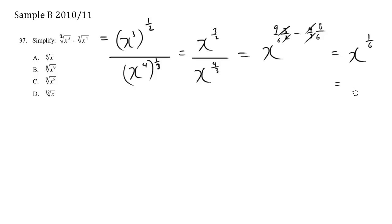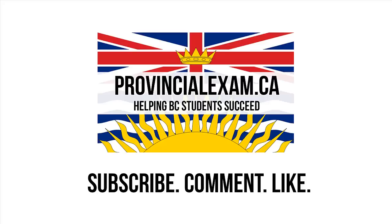which means the sixth root of x. So we have a radical symbol with index 6, which is choice A. Thank you.